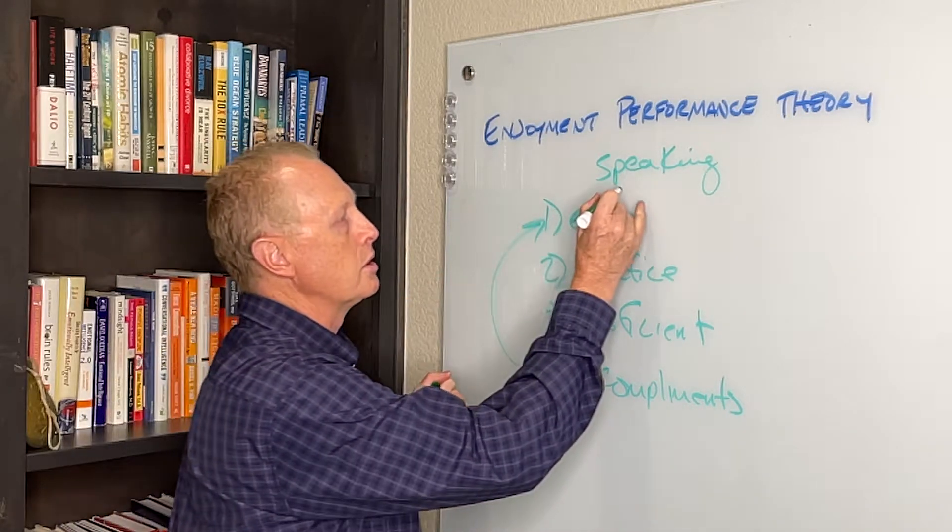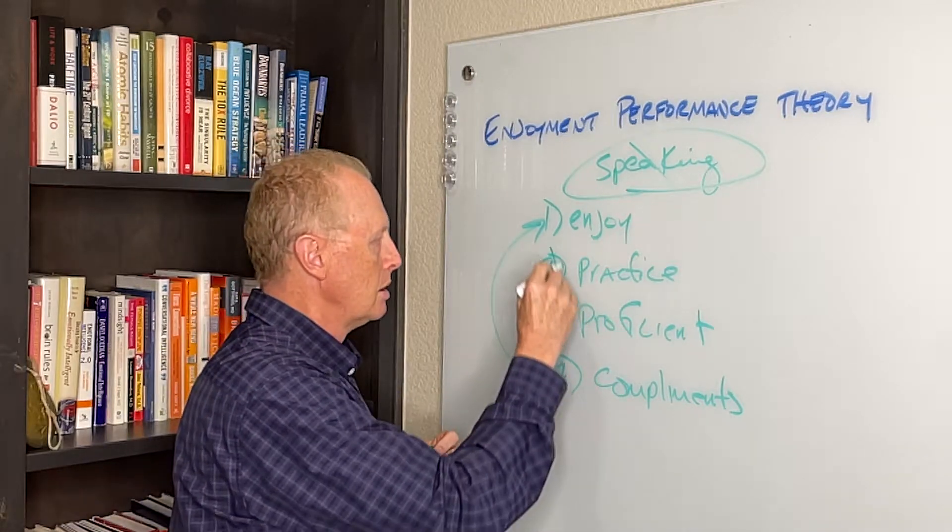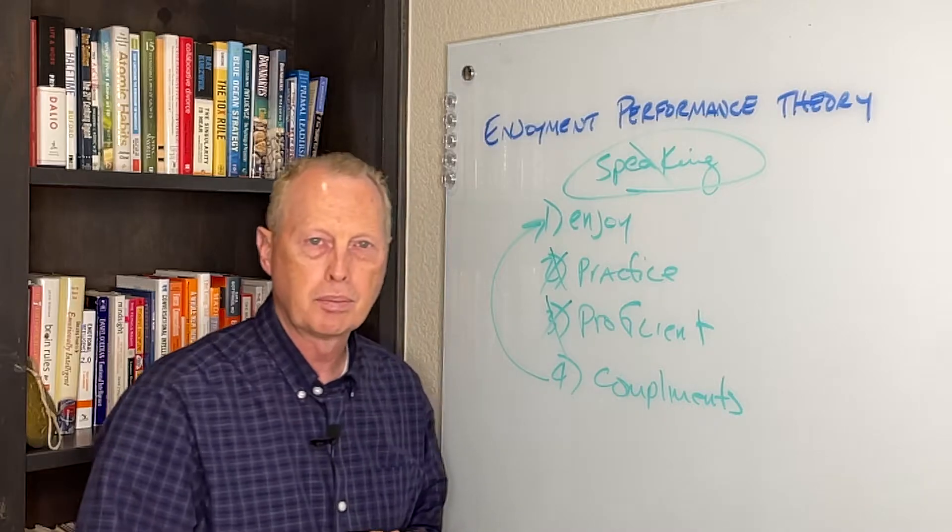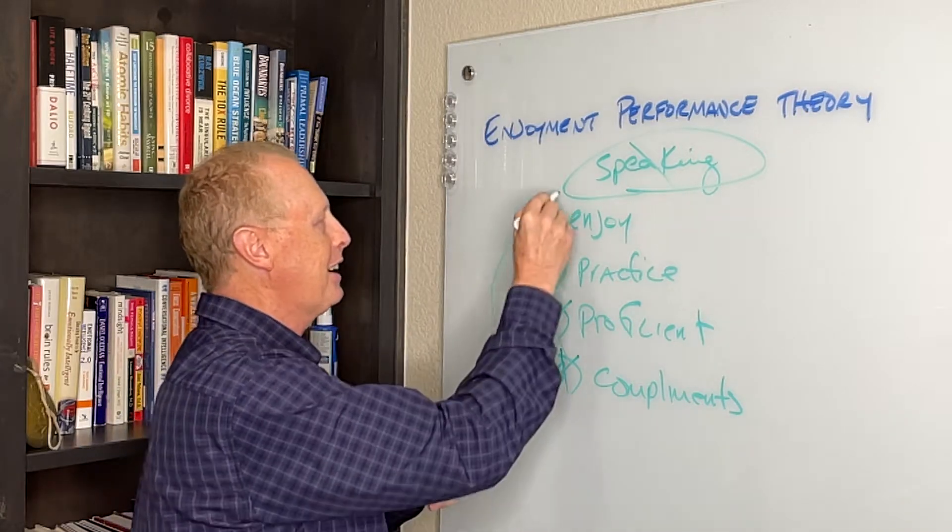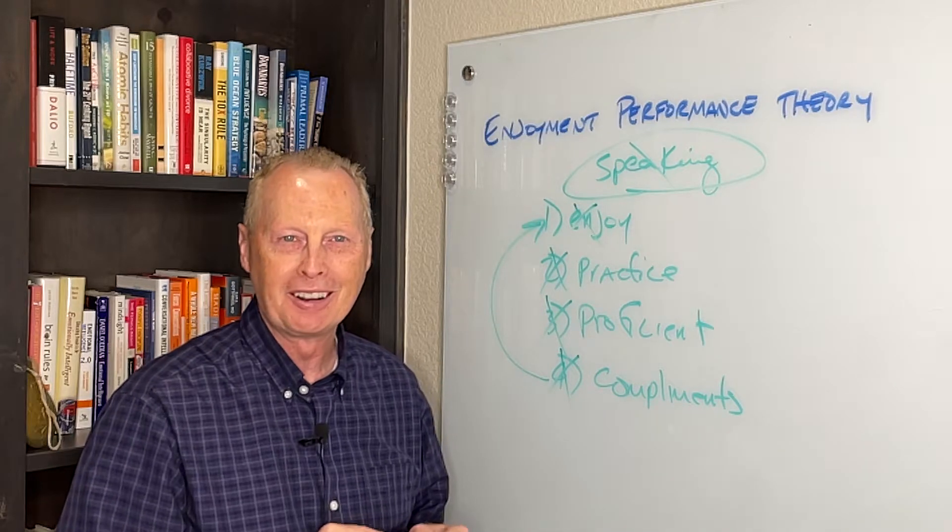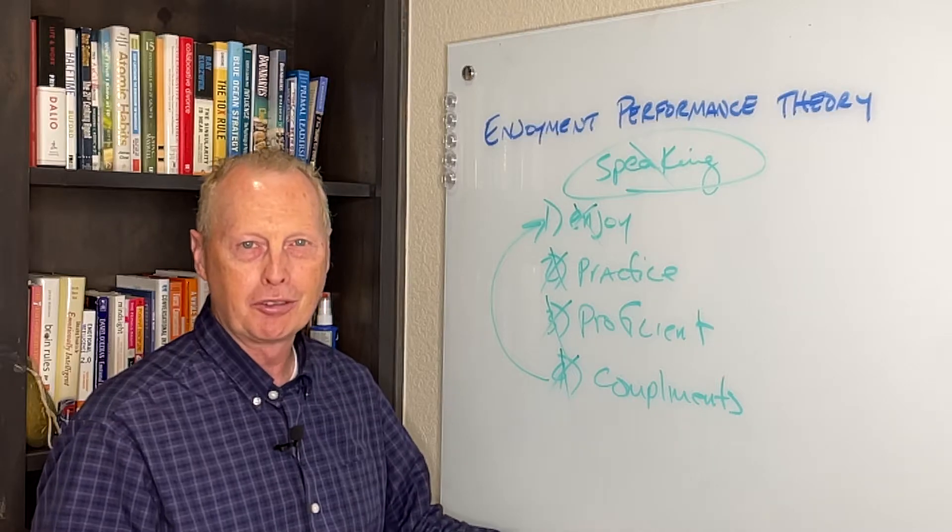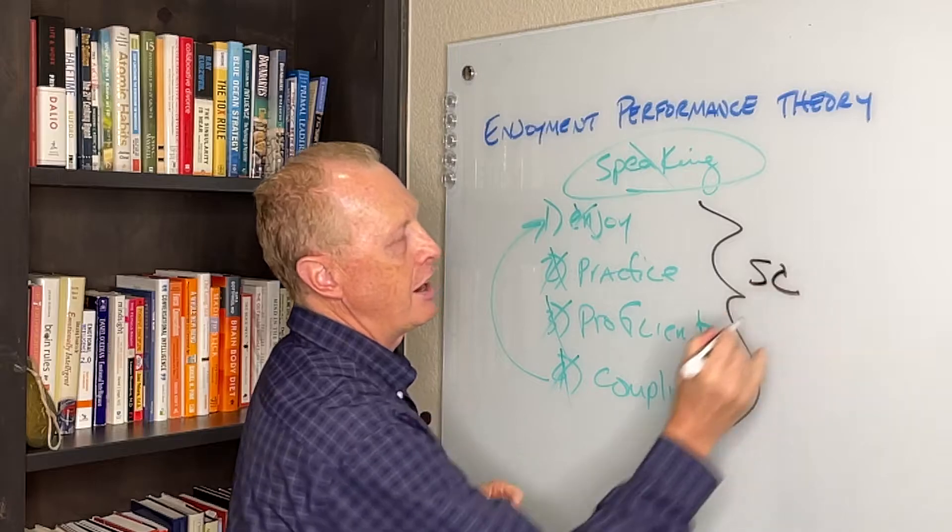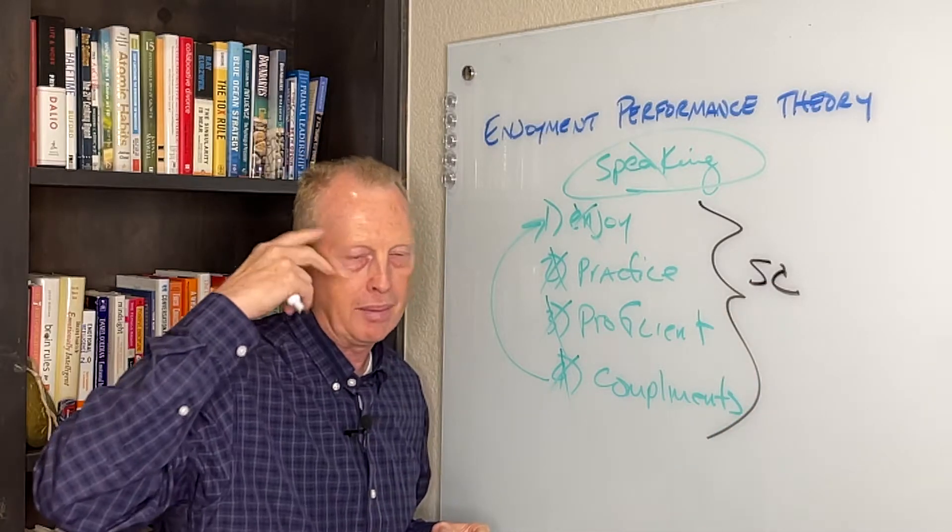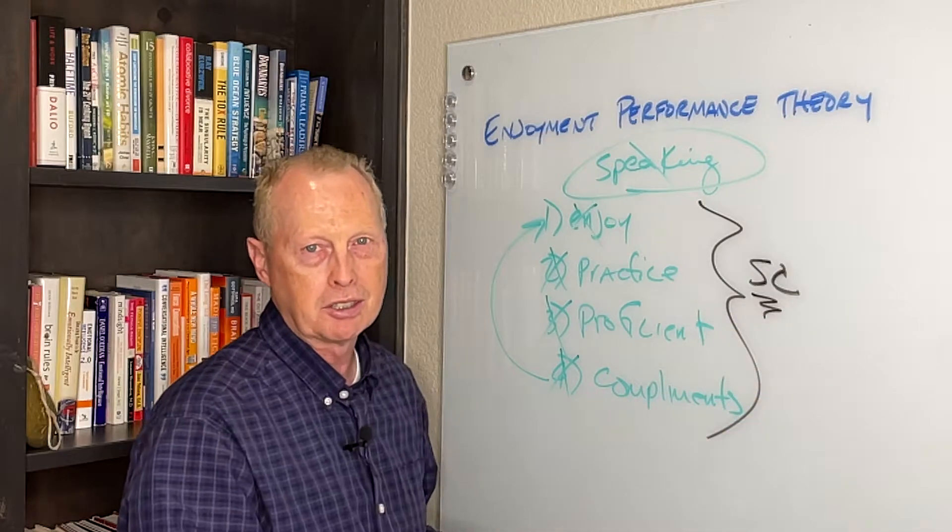What if I don't enjoy public speaking? I don't practice it. I don't become proficient. I don't get compliments, so I don't enjoy it more. It's that straightforward. That's why it's called Enjoyment Performance Theory, and you will find all of this is normally going to be found at the subconscious. You might be able to articulate it cognitively, but it will be a subconscious function.